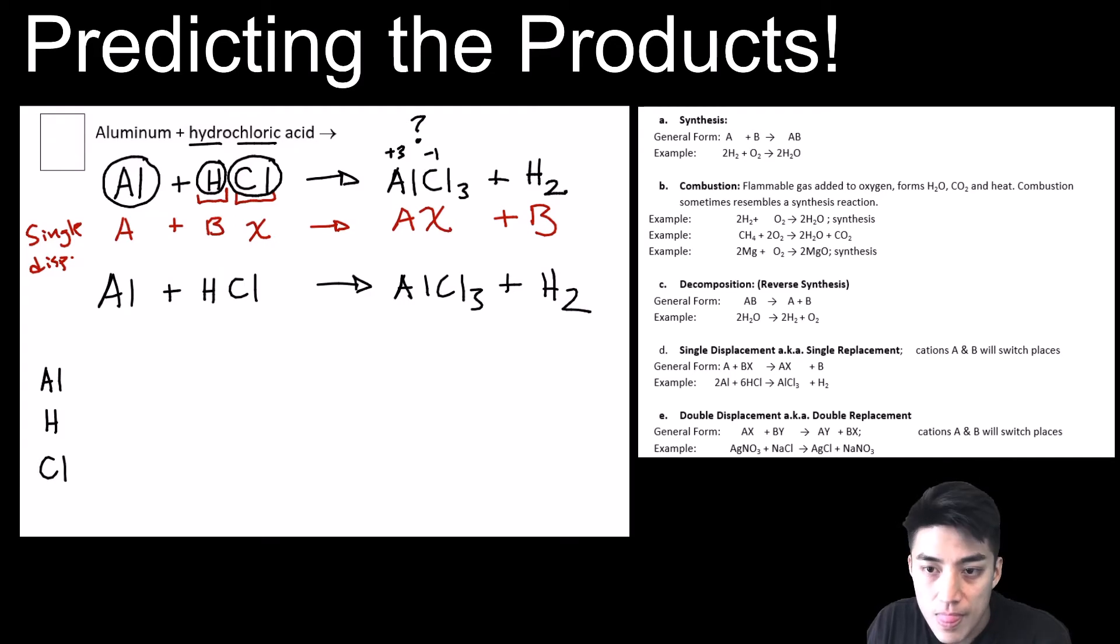So again, we're going to count them up. Aluminum, one. Hydrogen, one. Chlorine, one on the left. And on the right-hand side, it looks like a one, two, and a three. Okay, so we're going to try our best to balance this equation.